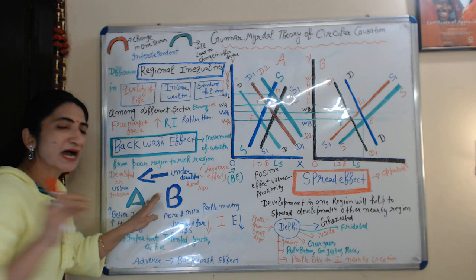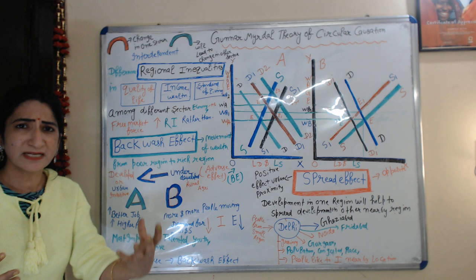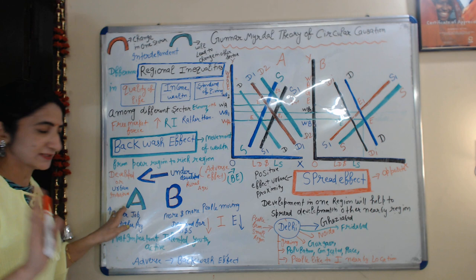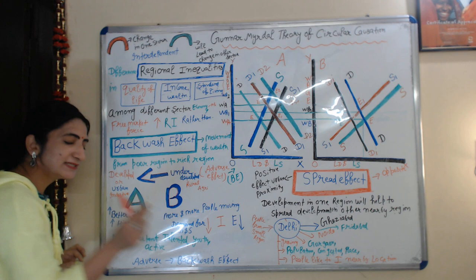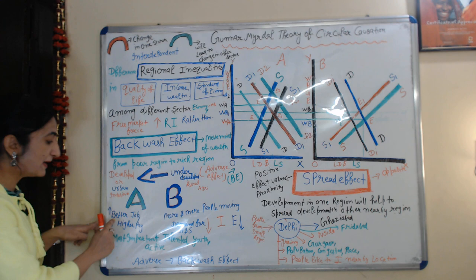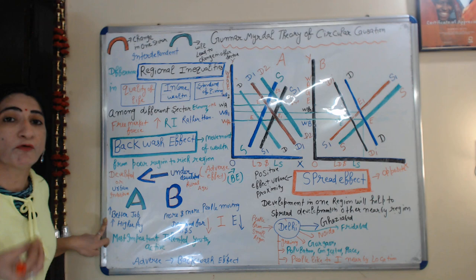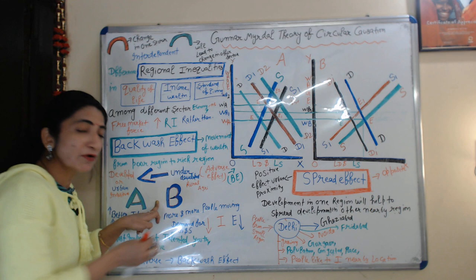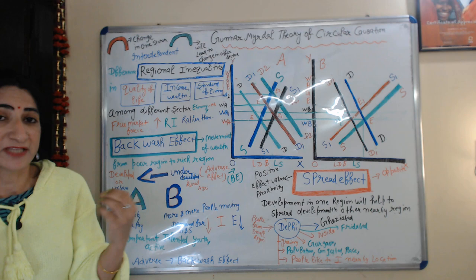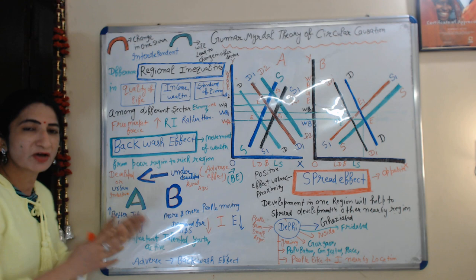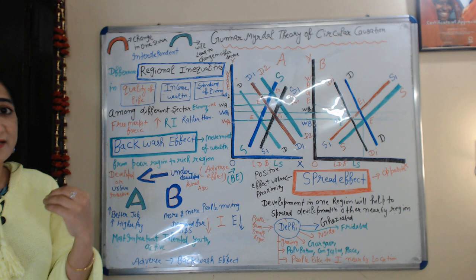For example, there are two regions A and B. A is the developed region and B is the underdeveloped region. Region A offers better job opportunities and higher pay, and people from region B start migrating to region A, attracted by higher job opportunities and higher pay.